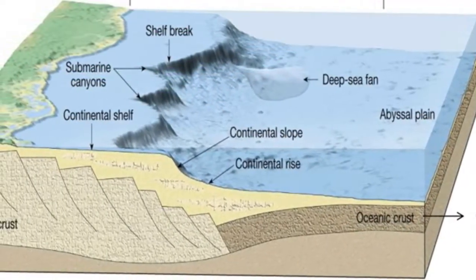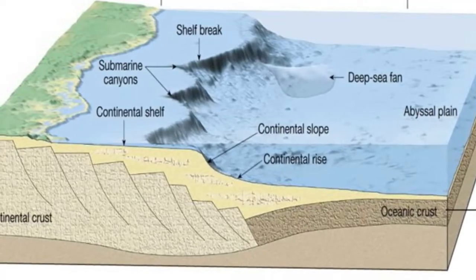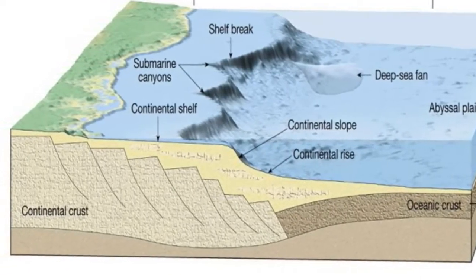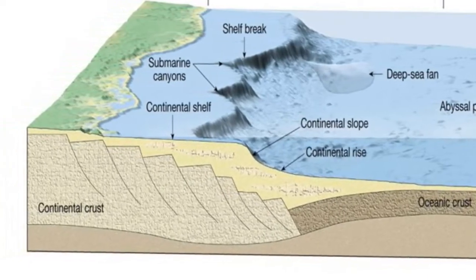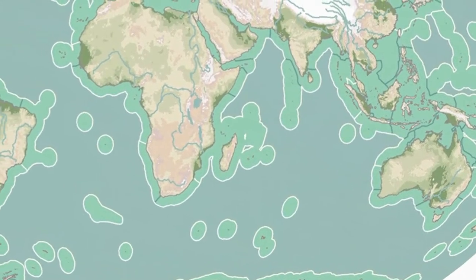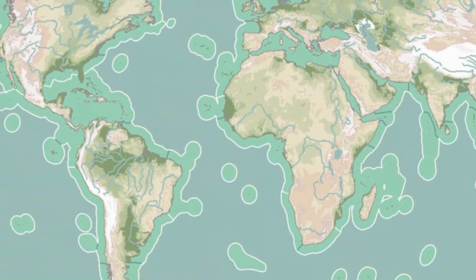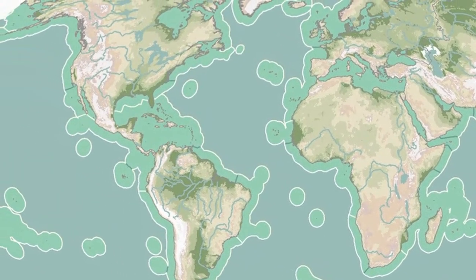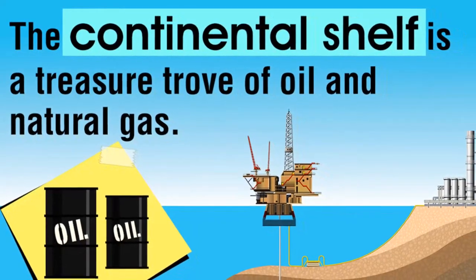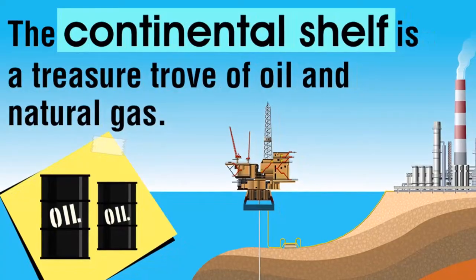First, the continental shelf. This is a gently sloping, submerged surface extending from the shoreline toward the deep ocean basin. Because it is underlain by continental crust, it is clearly a flooded extension of the continents. The continental shelf varies greatly in width. Although almost non-existent along some continents, the shelf extends seaward more than 900 miles along others. On average, the continental shelf is about 50 miles wide and 400 feet deep at its seaward edge. The average inclination of the continental shelf is about one tenth of one degree — a drop of only about 10 feet per mile — so slight that it would appear to an observer to be a horizontal surface.